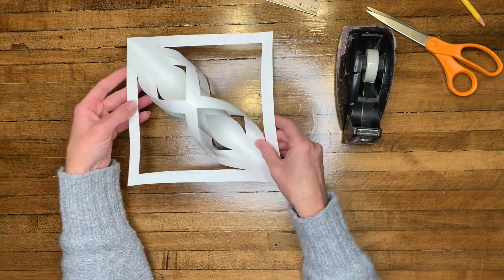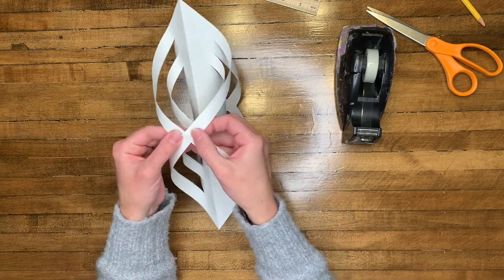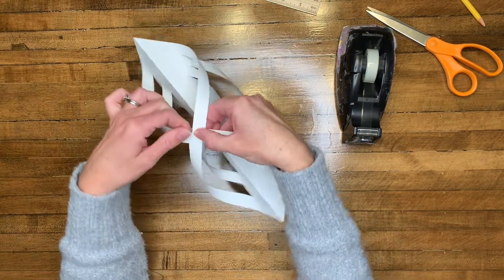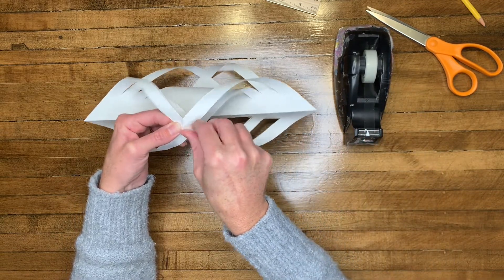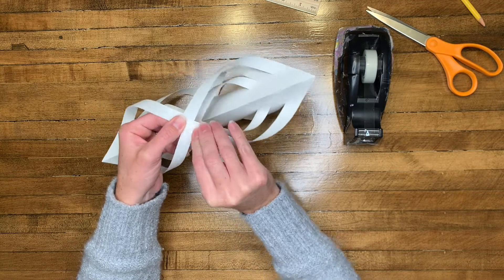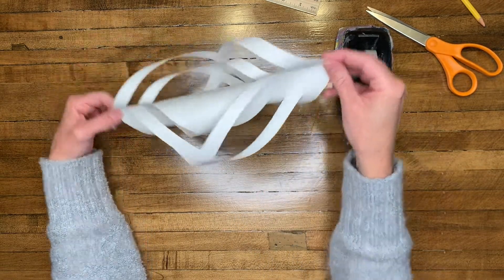Flip your sculpture over one last time and take that outer layer and overlap the points and tape the points together. This is how you're going to create one piece of your 3D snowflake.